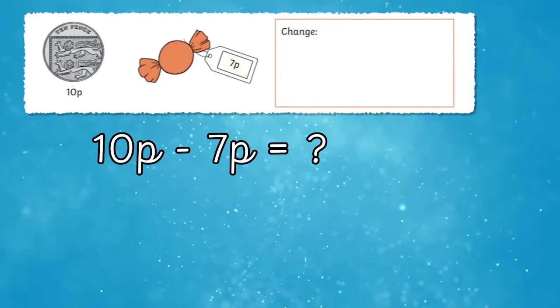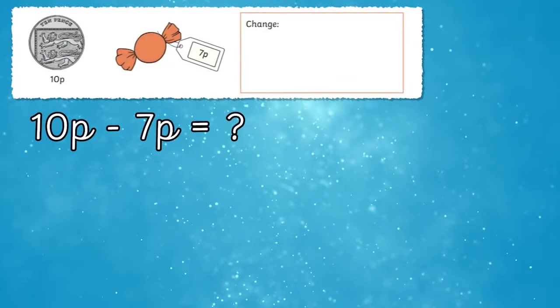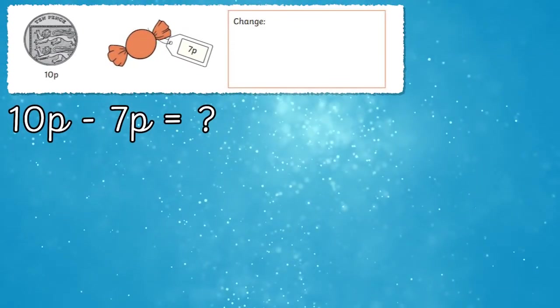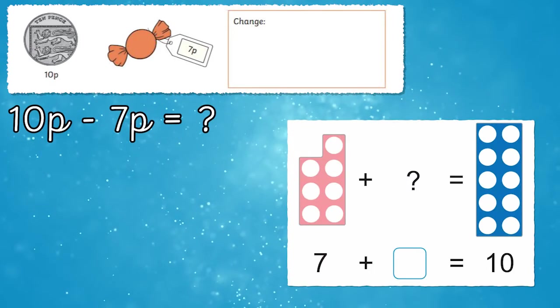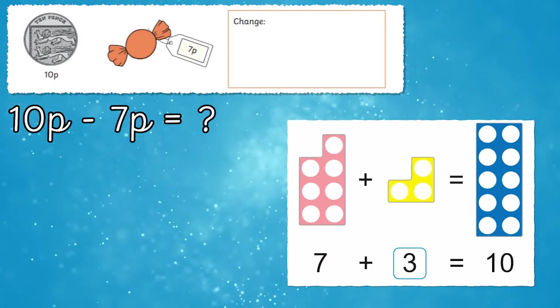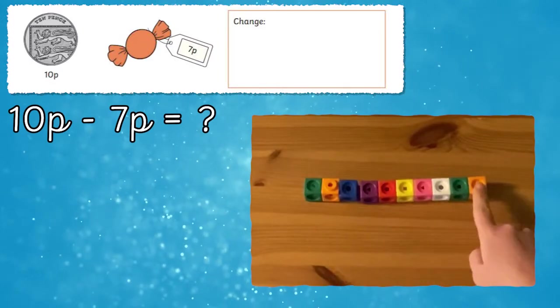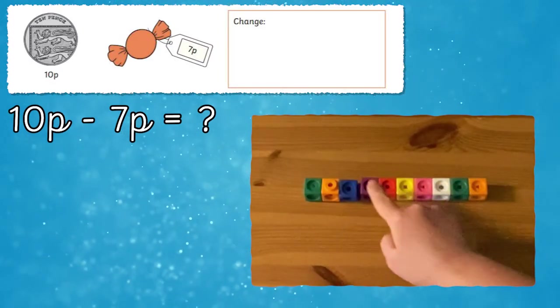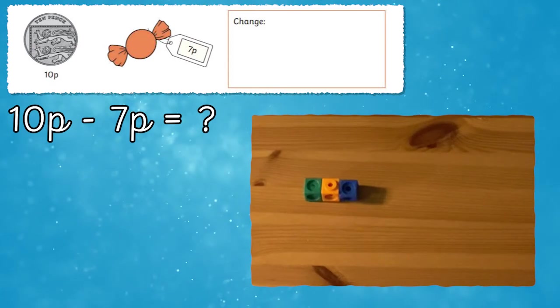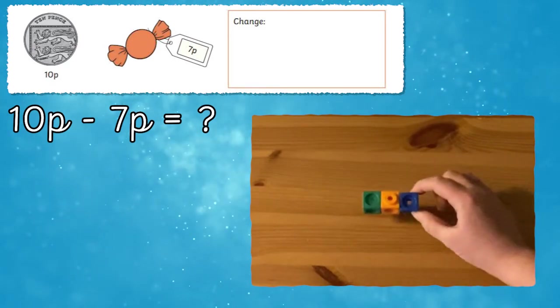There are several ways that children can work this out. They could use their number bonds to 10 facts. For example children may already know which number goes with 7 to make 10. Or your child could use a set of 10 objects like these maths cubes and take away 7 of them finding that there are 3 left over.